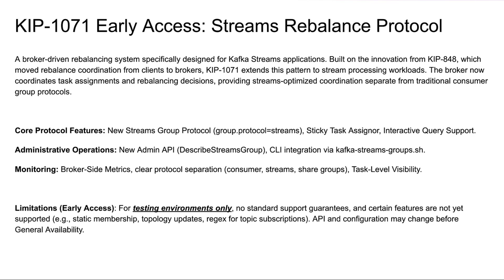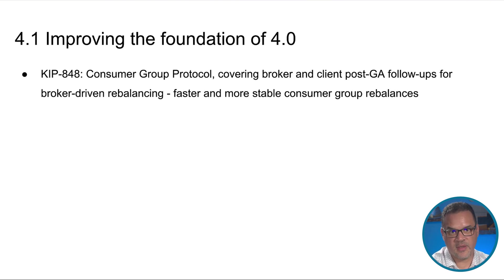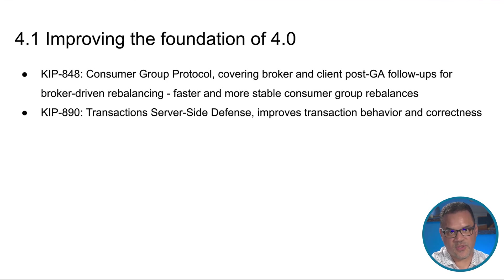But don't let that stop you from experimenting and providing feedback on this KIP to help shape its future. The 4.1 release improves on the foundation of the 4.0 release from earlier this year. Work continues on KIP 848, the new consumer group protocol, with broker and client enhancements for broker-driven rebalancing, making that process faster and more stable. KIP 890 continues the work on transaction server-side defense to improve transaction behavior and correctness.